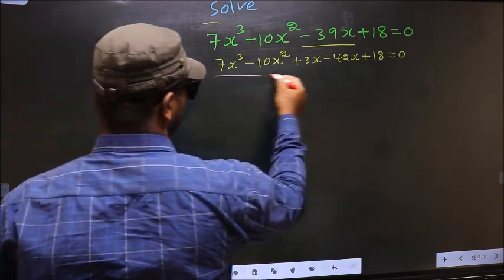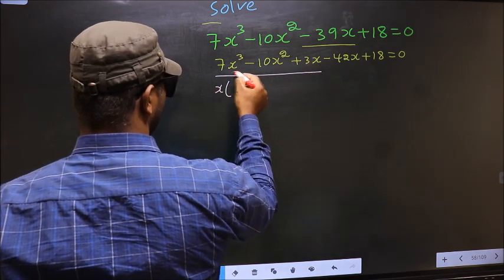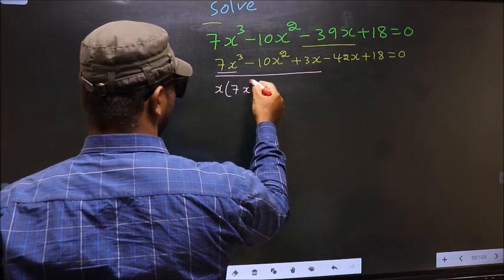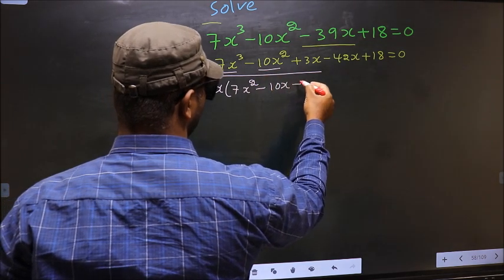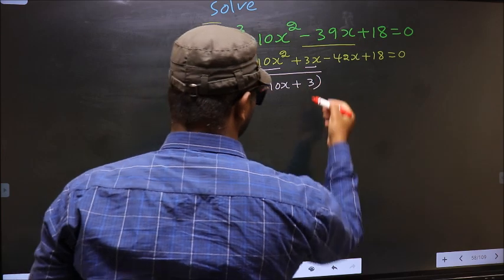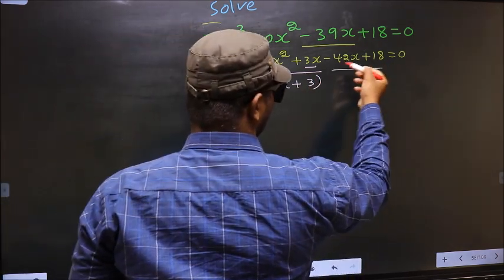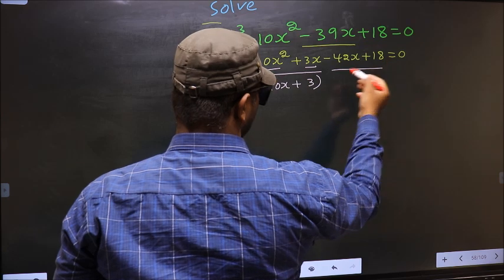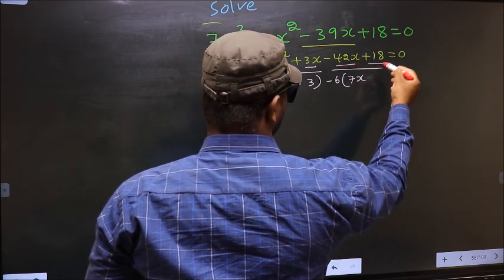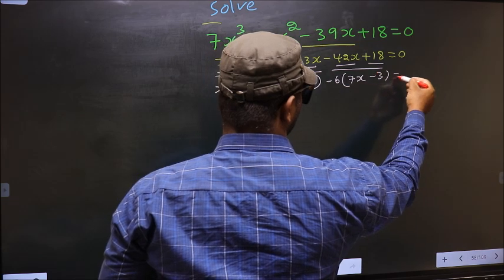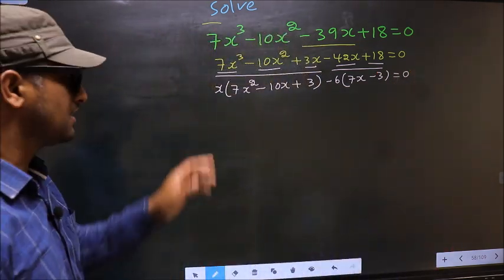Now, what can be taken out common from the first three terms is x. So you get x(7x² - 10x + 3). From the last two terms, taking out -6 common gives -6(7x - 3), equal to 0.